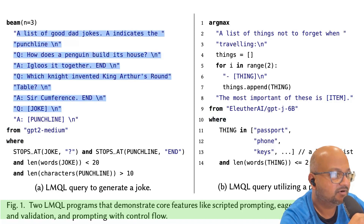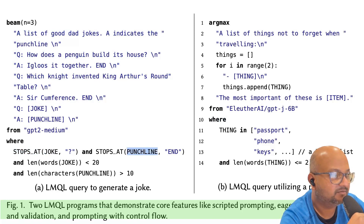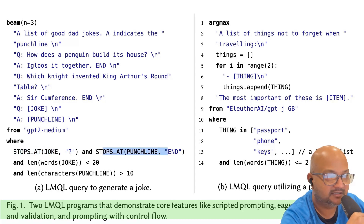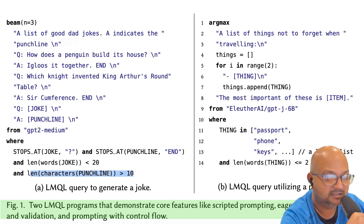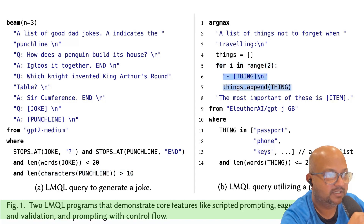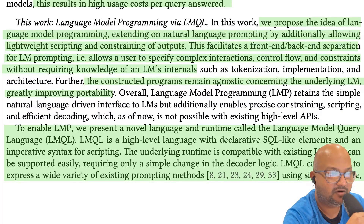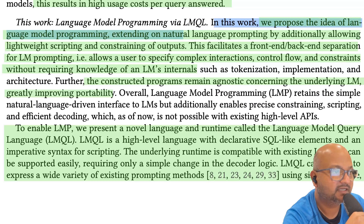The WHERE clause specifies constraints on the completions or on the variables. For example, in a prompt for generating jokes, you have constraints on the joke variable and the punchline variable for when to stop generation — such as stopping when the joke ends in a question mark, or when the punchline ends in the word 'end'. You can specify other constraints like the length of the completion or the number of characters. You can even have logic like for loops within your prompt. You can think of this almost as a prompt compiler, working at a level of abstraction above the specific language model.